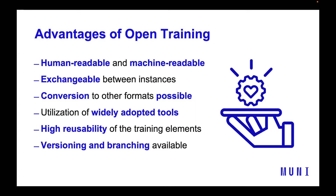I think the biggest advantage — besides the possibility of sharing — is that because everything is described as code, there is high reusability of training components. We can put everything together from building blocks, making it much faster and cheaper. Because everything is described as code, we also use Git for versioning and branching to keep everything in order. More about this will be covered later by one of my colleagues.